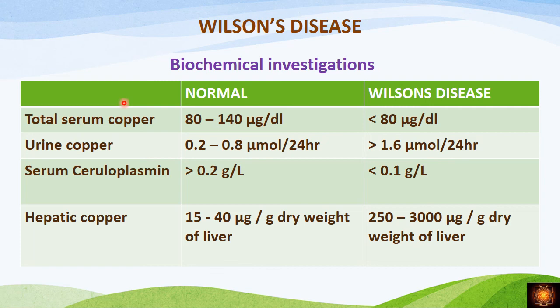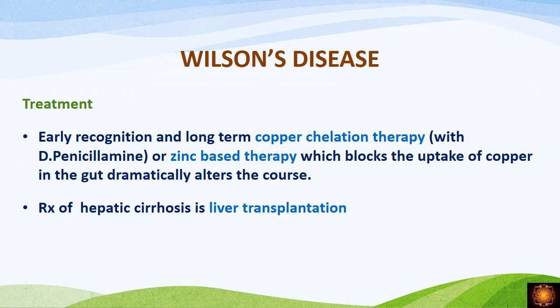Investigations in Wilson's disease: total serum copper is reduced; urine copper is increased, more than 1.6 micromoles per 24 hours; serum ceruloplasmin is reduced because ceruloplasmin is not formed. The gold standard is measurement of hepatic copper — normally 15 to 40 micrograms per gram dry weight of liver, whereas in Wilson's disease it is 250 to 3000 micrograms per gram dry weight. Measuring hepatic copper is the gold standard for diagnosis.